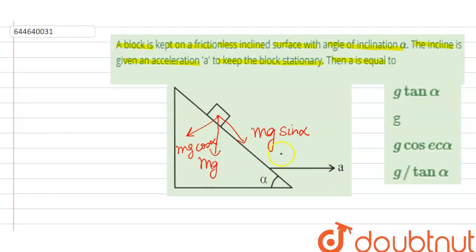And due to this acceleration, a force is exerted on the block in opposite direction, that is pseudo force, ma, with this angle alpha. Now taking the component of ma here, it is ma cos alpha.